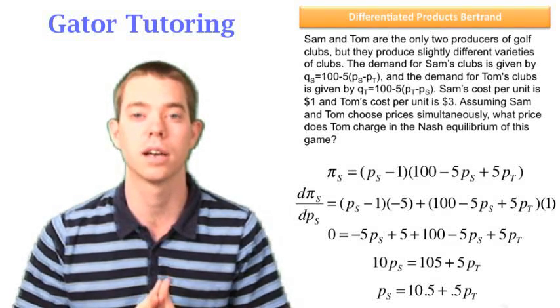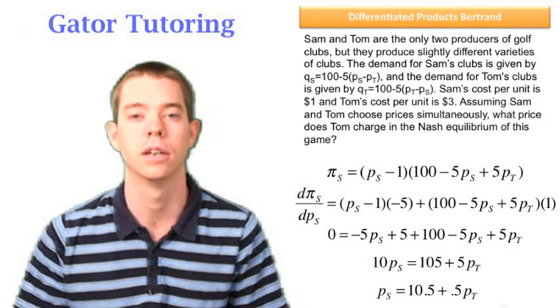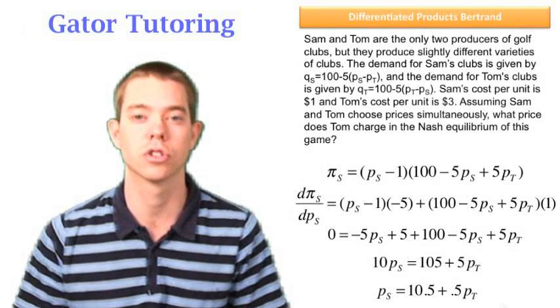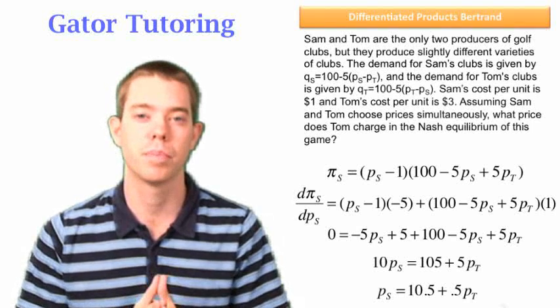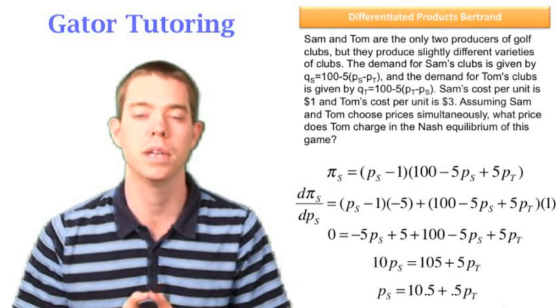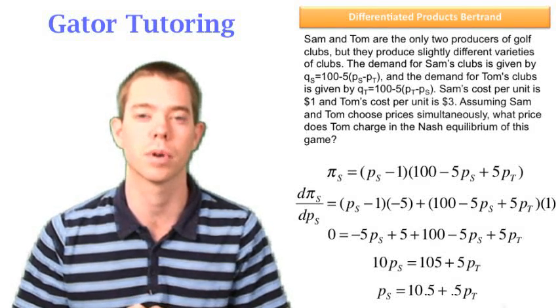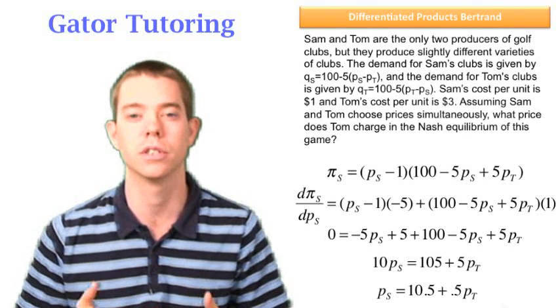Notice there's a plus sign before the 0.5 PT. This means that the reaction functions are upward sloping, which makes sense. Because if you're competing in price and your competitor raises his price, you're going to want to respond by raising your price as well.